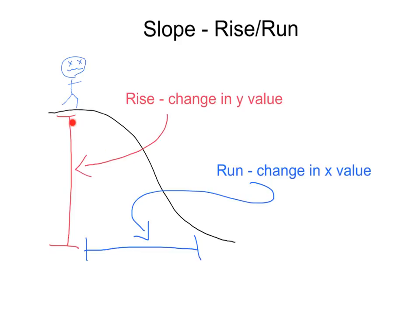In graphing lines, I want you to think of this vertical component, this up and down, as the rise, or the change in the y value. This horizontal component we could think of as the run, or the change in the x value.